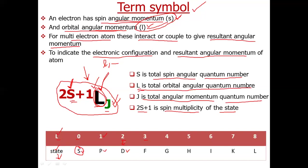Now let us take an imaginary example. Suppose S is 0, L is 1, and J is also 1. For these three values the term symbol will be: 2×0 = 0, 0+1 = 1, so the superscript is 1. L is 1, so we use the symbol capital P. J is 1, giving the complete term symbol 1P1. That is how we define a term symbol.